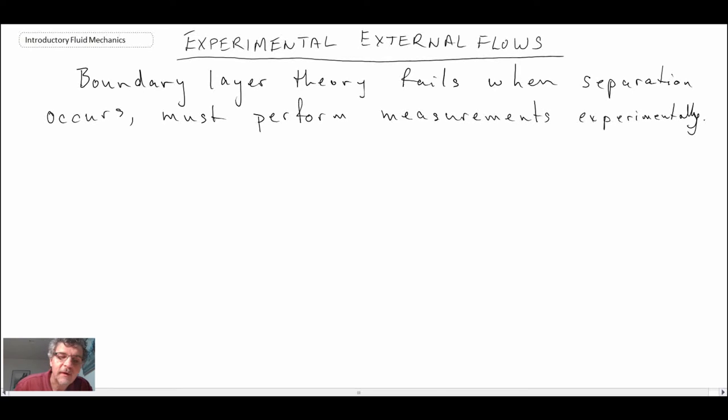We're going to consider the forces that might exist on a body. Imagine we have some generic body - it kind of looks like a potato, but it could be anything - and we will have a free stream velocity coming towards that body.